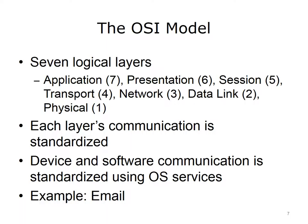To understand how hardware and software use operating system services, let's look at the example of creating and sending an email message. First, you open the email application, then you start a new message, type what you want to say, and send the email. The email application needs operating system services to take the email from what is seen on the screen and make it into an electronic equivalent that can be sent out via the computer's network interface card, or NIC. Many operating system services work together to accomplish this task. Services operate within specific OSI logical layers; one service can operate in many layers depending on what it is doing at any moment in time. Services call on each other as the email works its way towards the NIC via the motherboard circuitry.